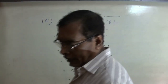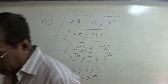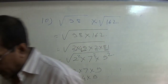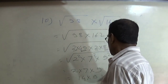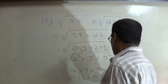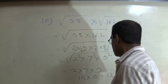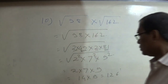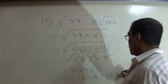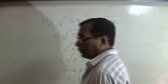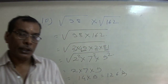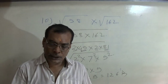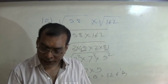The square root removes the squares, giving us 2 × 7 × 9 = 14 × 9 = 126. So 126 is our answer. This way I have finished this particular exercise.